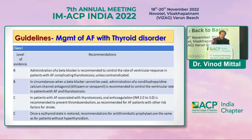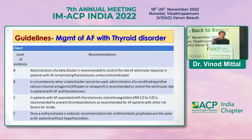Per guidelines (Level of Evidence B), beta-blockers are recommended for rate control. In circumstances where beta-blockers cannot be used, non-dihydropyridine calcium channel blockers are indicated.